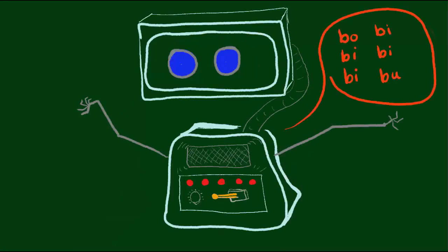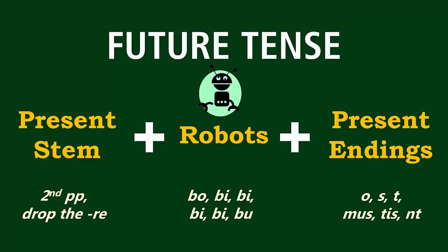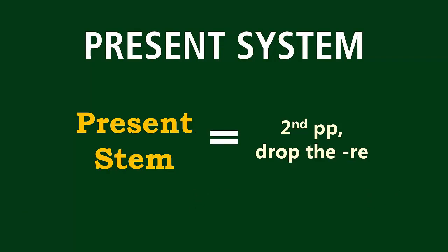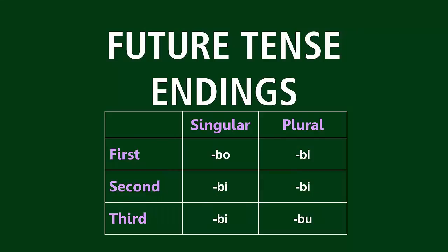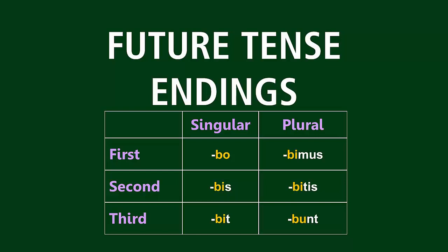But for now, onward into the future! Let's review the steps for forming the future tense. The future tense is part of the present system, which means that you form it using the present stem. You find the present stem by going to the second principal part and chopping off the RE. Then you add in the robot sounds: bo-bee-bee-bee-bee-boo. Then all you do is add the personal endings.